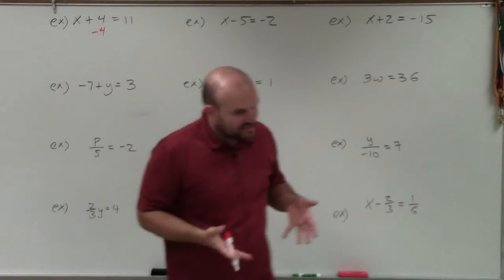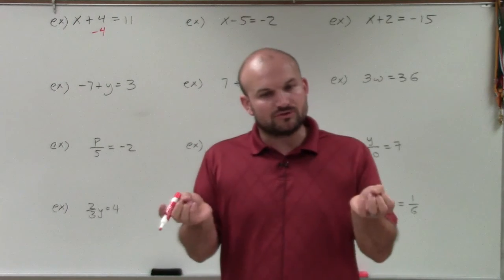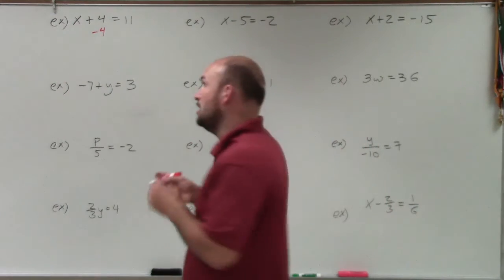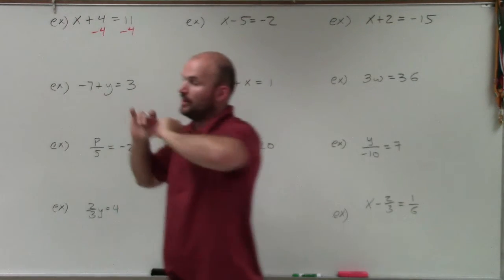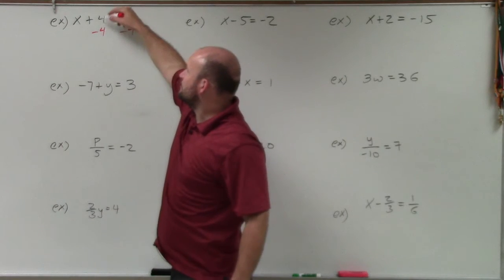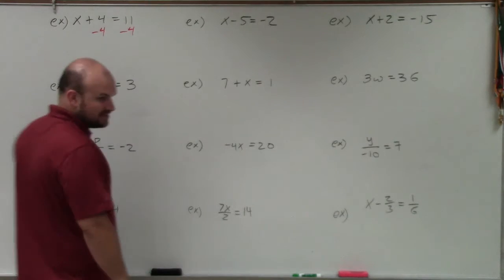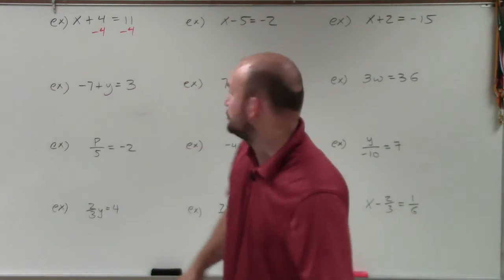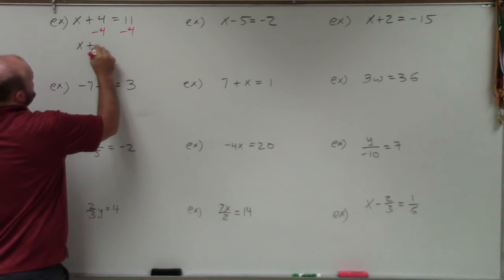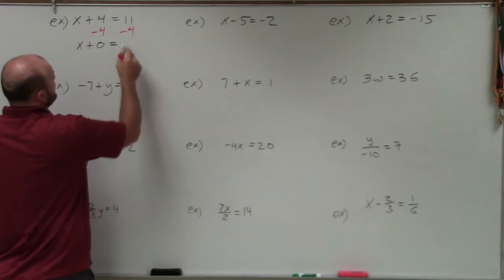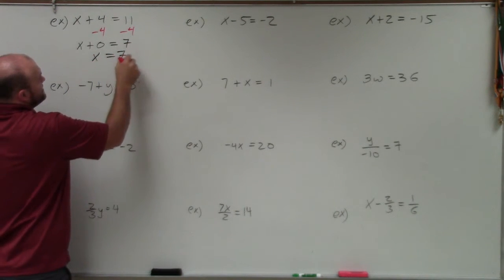Remember, equations are equal to each other, so we have to use the properties of equality: whatever you do to one side, you have to do on the other side. When we subtract 4 from both sides, 4 minus 4 becomes x plus 0 equals 11 minus 4, which is 7. And x plus 0 is just x equals 7. Now you can see that my variable is isolated.